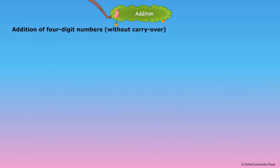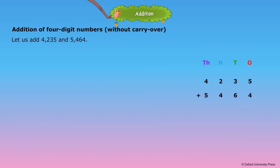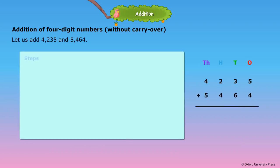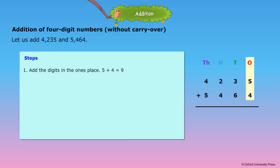Addition of 4-digit numbers without carryover. Let us add 4,235 and 5,464. Step 1: Add the digits in the ones place. 5 plus 4 is equal to 9.